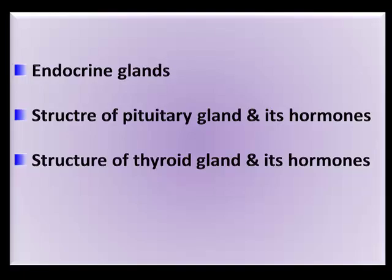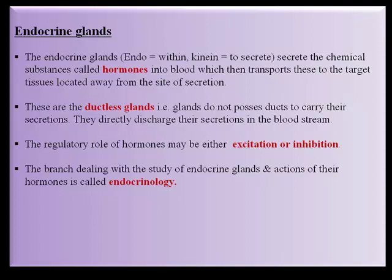Hormonal coordination: endocrine glands secrete chemical substances called hormones into the blood, which then transports these to the target tissues located away from the site of secretion. These are ductless glands — they do not possess ducts to carry their secretions and directly discharge them into the bloodstream. The regulatory role of hormones may be either excitation or inhibition.